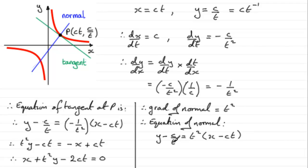And again, we could get rid of the fraction here, multiply throughout by t, and therefore we get ty minus c equals t cubed here. And if we expand the bracket, we're going to get t cubed x, and then minus ct to the power 4.